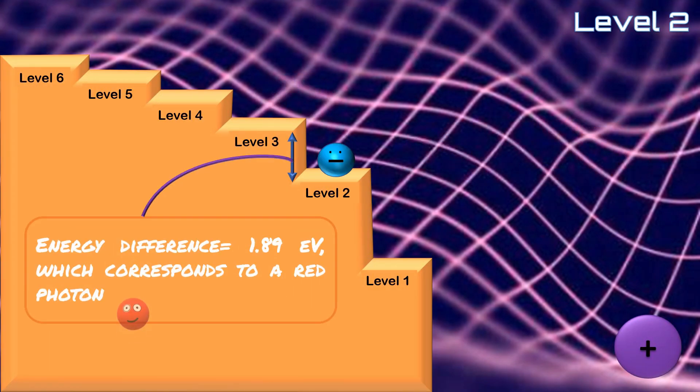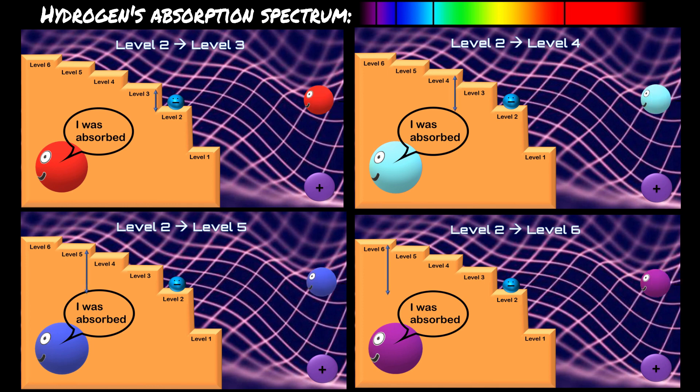But that photon must be of the exact energy difference between the two levels, the exact colour, otherwise it will pass right through. This is how we get hydrogen's absorption spectrum. Specific colours are absorbed by the electron to jump to different steps.